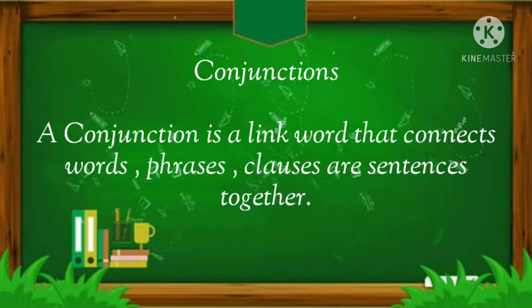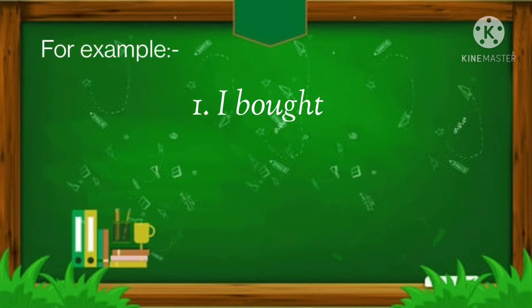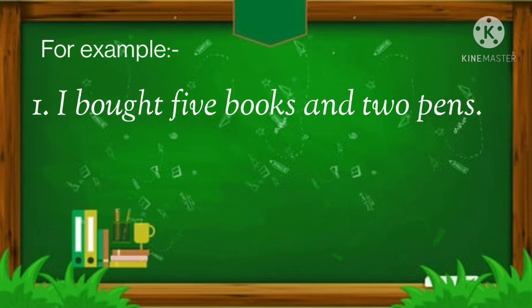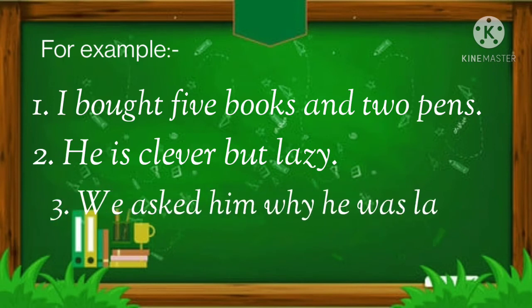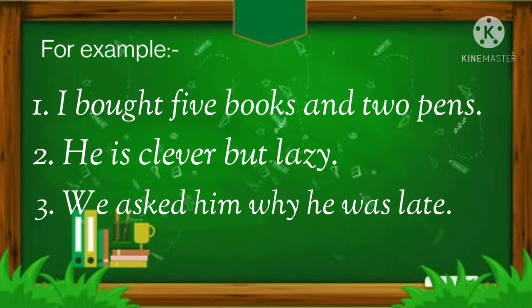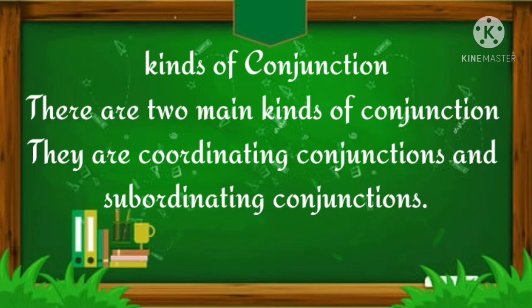A conjunction is a link word that connects words, phrases, clauses or sentences together. For example: I bought five books and two pens. He is clever but lazy. We asked him why he was late. Here, 'and', 'but' and 'why' are the conjunctions. They join a sentence with words or a sentence with a phrase.